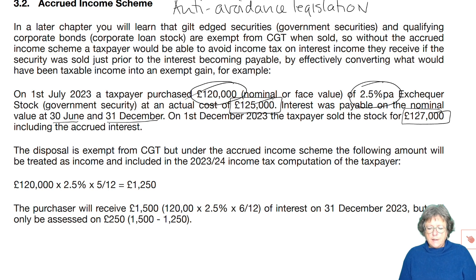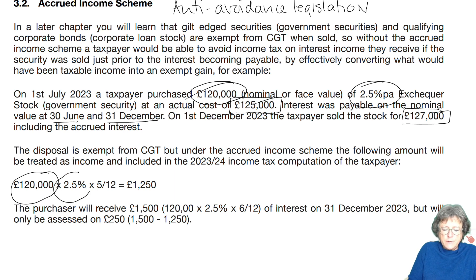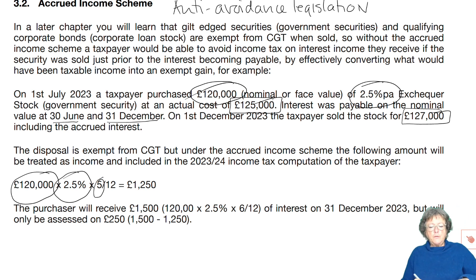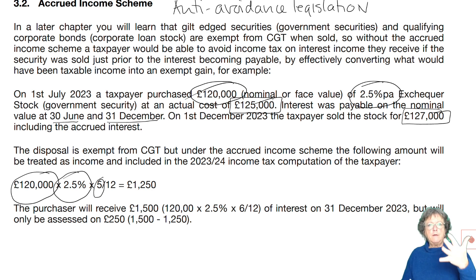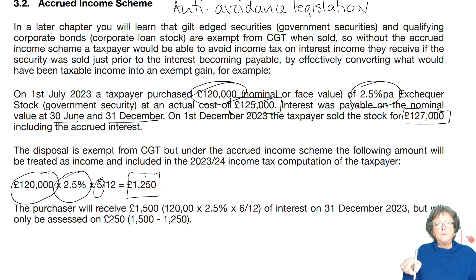Under the accrued income scheme the following amount is taxed as income. You've got £120,000 face value, 2.5% interest percentage, and five months — that's from 1st of July through July, August, September, October and November. Five months of interest that you are entitled to pay tax on. You have tried to avoid it and we're not going to let you. The calculation is £1,250 and that would go in your income tax computation.